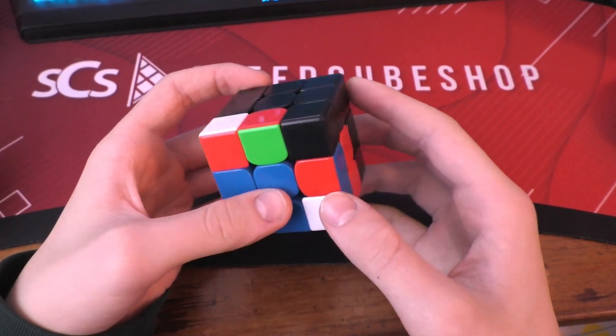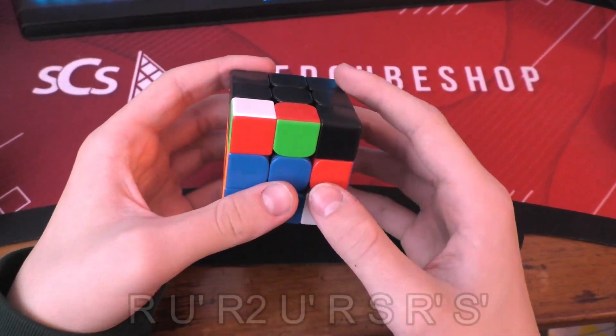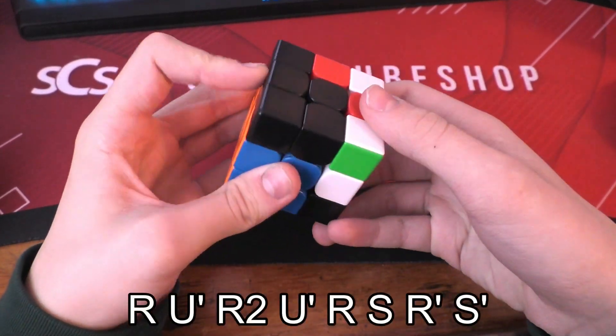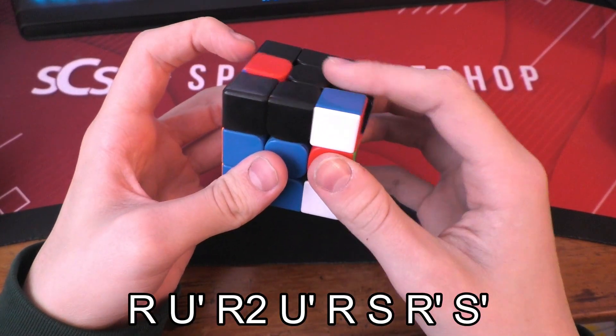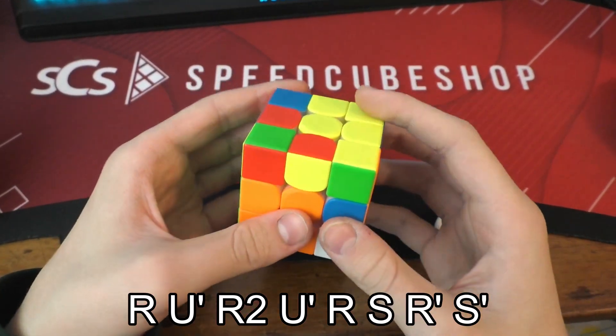First up, the case where this back pair is unsolved, and the algorithm goes like this. And now here it is a little faster on my GAN 12.